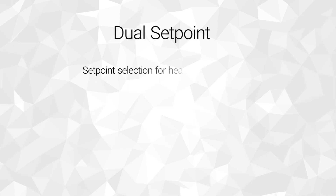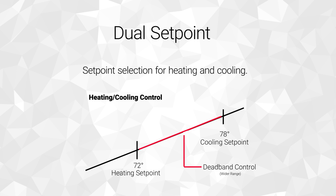Now let's look at a dual set point thermostat. As the name suggests, a dual set point thermostat has two distinct set points — one for heating and one for cooling. This allows for more control of the dead band, as the user now selects the temperatures required for the HVAC system to make a changeover from heating to cooling, or vice versa. As you can see, this allows for tighter control of the system, leading to energy savings and money in the facility owner's pocket.